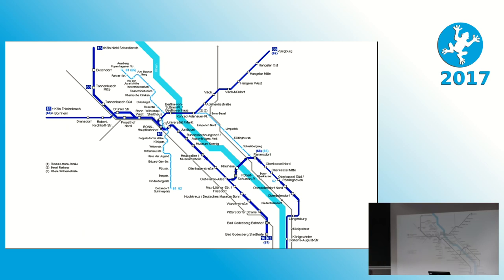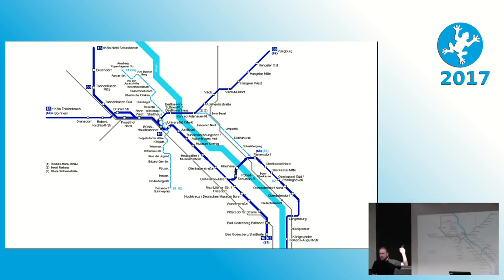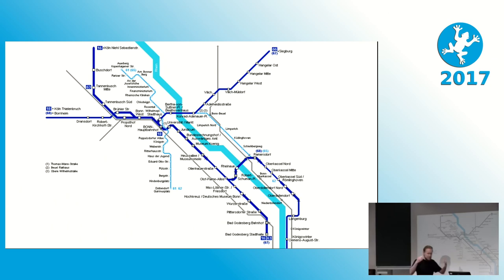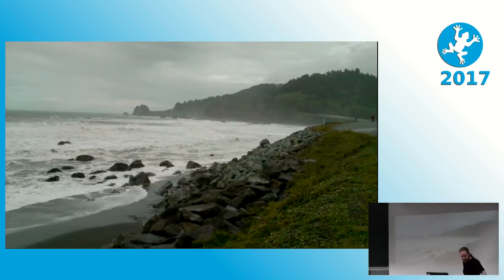With a visual map we can leverage that spatial understanding to understand complex things like software. When you read source code, that's what your brain does anyway — you parse it, build a mental map of what talks to what, and when you get interrupted you lose that map and have to rebuild it. It would be very nice if software were represented visually right away.